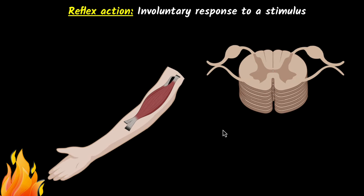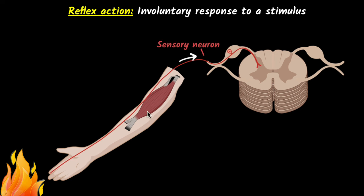But how does it happen? How does it all become automatic? Let's see that in the next slide. Here's the same example: when I move my hand close to the flame, what really happens? Well, there are a few neurons involved. The first neuron is what we call the sensory neuron. It's a long neuron that starts from our fingers and goes all the way into our backbone — this is our spinal cord.